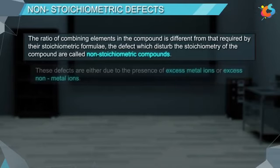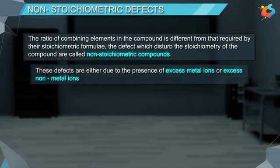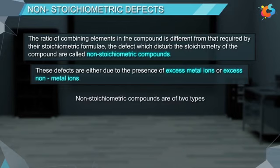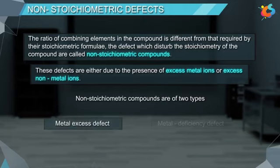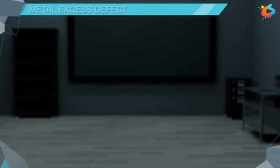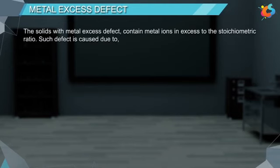These defects are either due to the presence of excess metal ions or excess nonmetal ions. Non-stoichiometric compounds are of two types: metal excess defect and metal deficiency defect.